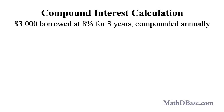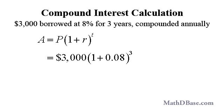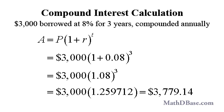Let's use the formula to solve the problem we looked at earlier, calculating the amount of interest on $3,000 at 8% over three years if the interest is compounded annually. A equals P times (1 plus R) to the T becomes $3,000 times (1 plus 0.08) to the third, or $3,000 times 1.08 to the third. 1.08 to the third equals 1.259712, and $3,000 times 1.259712 equals $3,779.14, rounded to the nearest penny, as before.